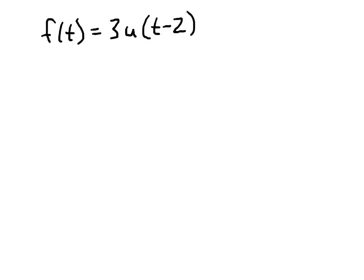Now we'll look at a simple application of the step function. Let's define the function f of t to be 3u of t minus 2. So the u of t minus 2 we can think of as a switch that turns on at time 2 and takes the value 1 then. But we're multiplying by 3. So what this function f of t is, is it's a function that has value 0 until we get to 2, time 2. And then after time 2, it will have value 3. So its graph will look like this.